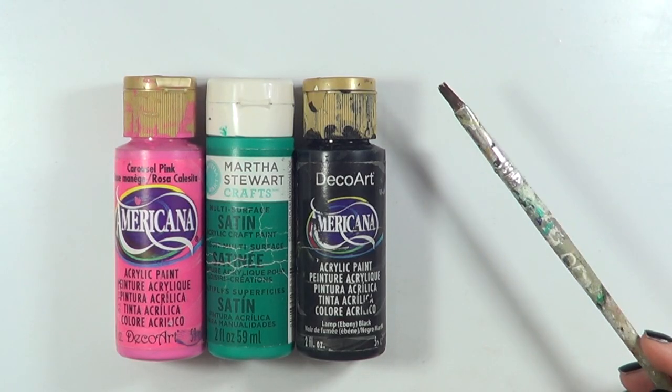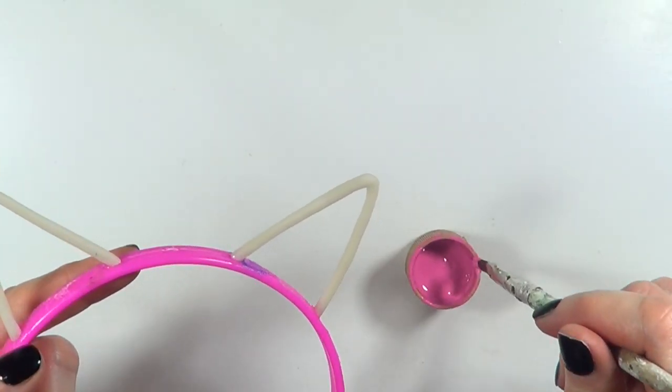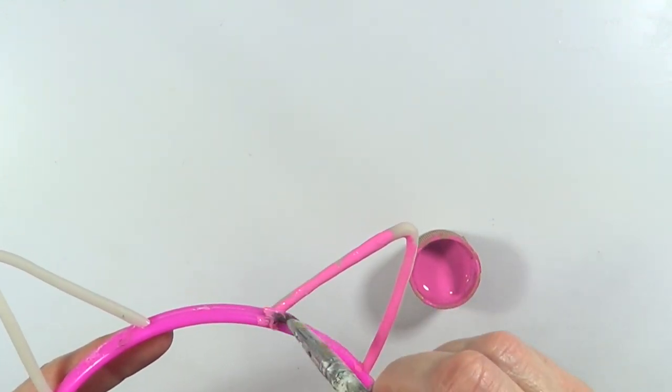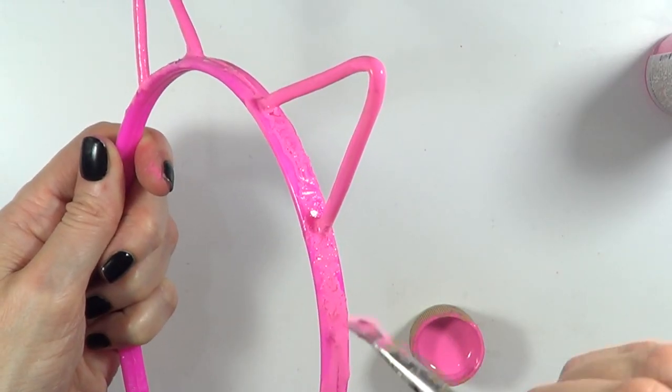Then I'm going to be taking some pink, teal, black acrylic paint and a brush. And I'm just going to be painting the whole thing just so everything is the same shade of whatever acrylic paint I'm using.